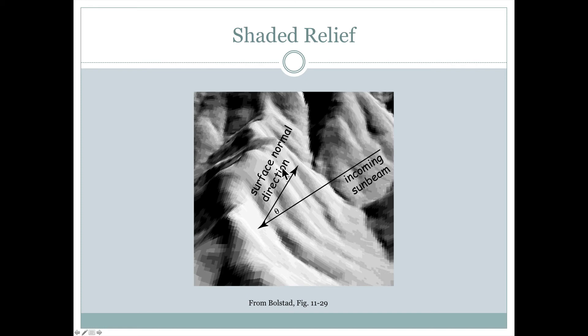Once we know the surface normal direction, we just imagine a beam of light coming in. If the beam of light lines up directly with the surface normal — shining straight down on it — we would have very bright terrain.